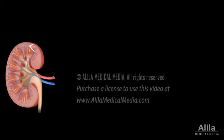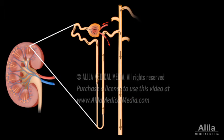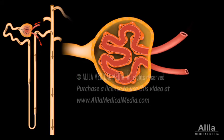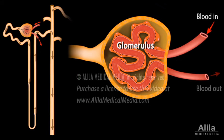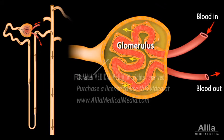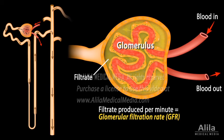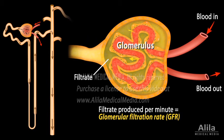Blood is filtered in functional units of the kidney called the nephrons. Filtration occurs primarily in the glomerulus of the nephron. The amount of filtrate produced per minute is called glomerular filtration rate, or GFR, an indicator of how well the blood is filtered by the kidneys.